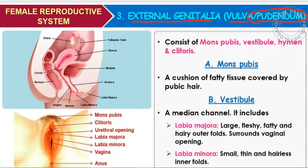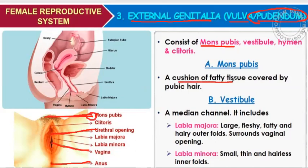There are three openings: the first one is the urethral opening, the second one is the vagina, and the third one is the anal opening. External genitalia consists of the mons pubis. Mons pubis is a fatty cushion — a fatty layer present in the upper part of the female genitalia — and there are hairs present upon the mons pubis.